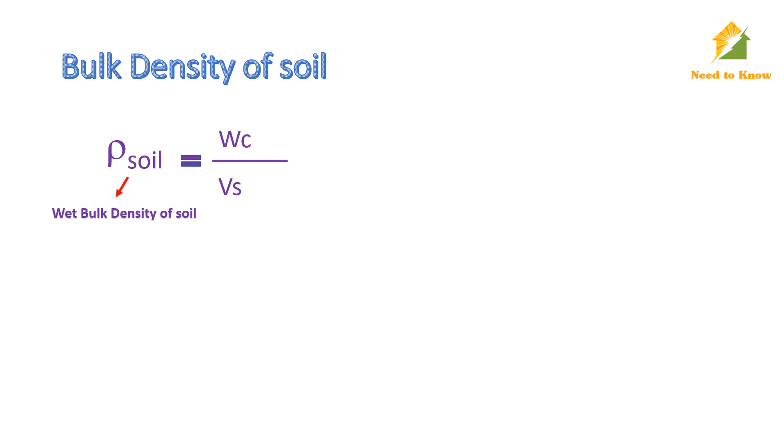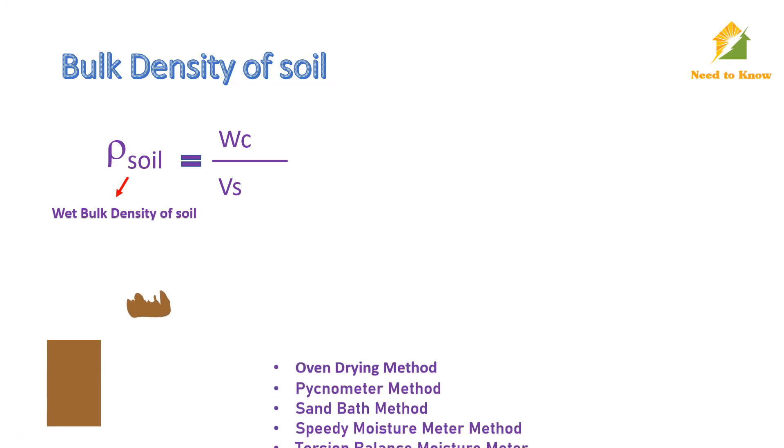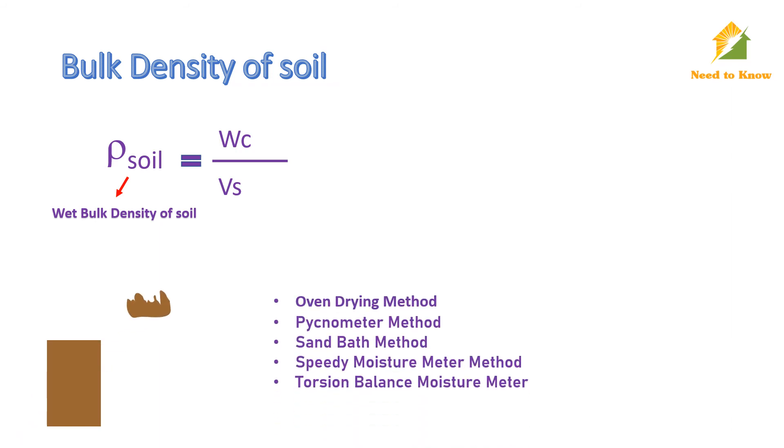Because soil has some moisture content, to determine moisture content, take a small sample of soil from the center of the core soil and, using any of the moisture content determination methods, determine moisture content and note down as Wm. Now, dry density is then determined using this formula, where ρ soil is the bulk density of soil and Wm is moisture content.